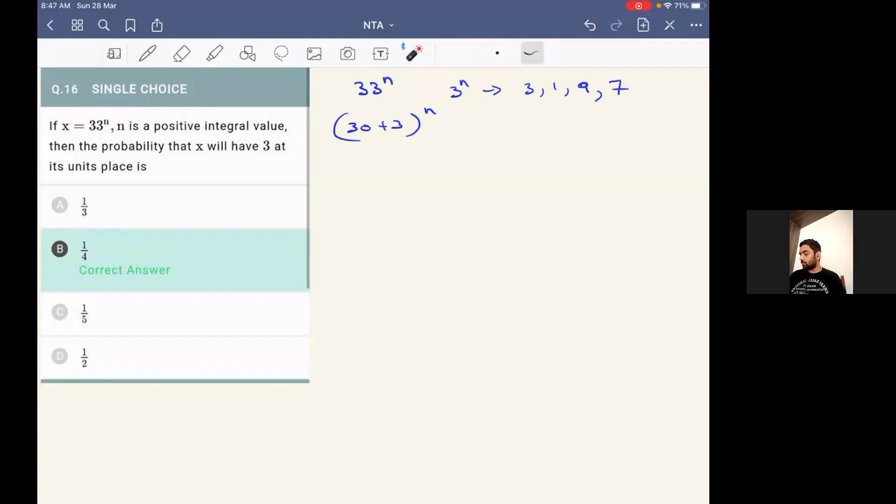So there are total of 4 possibilities. And out of this we want 3. So we know that according to fundamental probability, probability will come out to be number of favorable outcomes by total outcomes, which will be 1 by 4. So we can clearly see the correct answer will be option B.